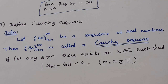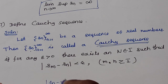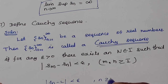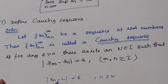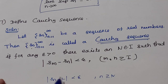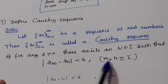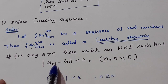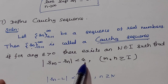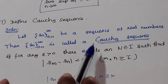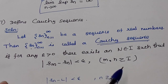That is, after a certain stage, the difference between any two terms Sₘ and Sₙ is less than epsilon. This condition defines the Cauchy sequence.